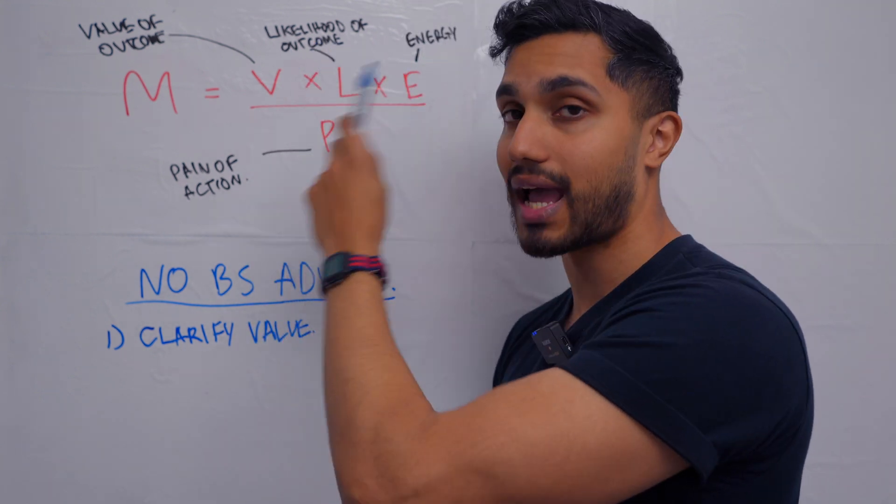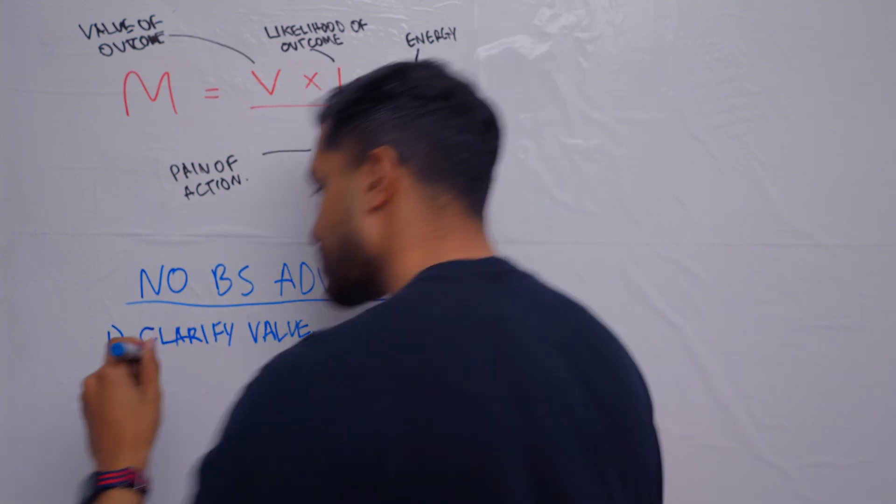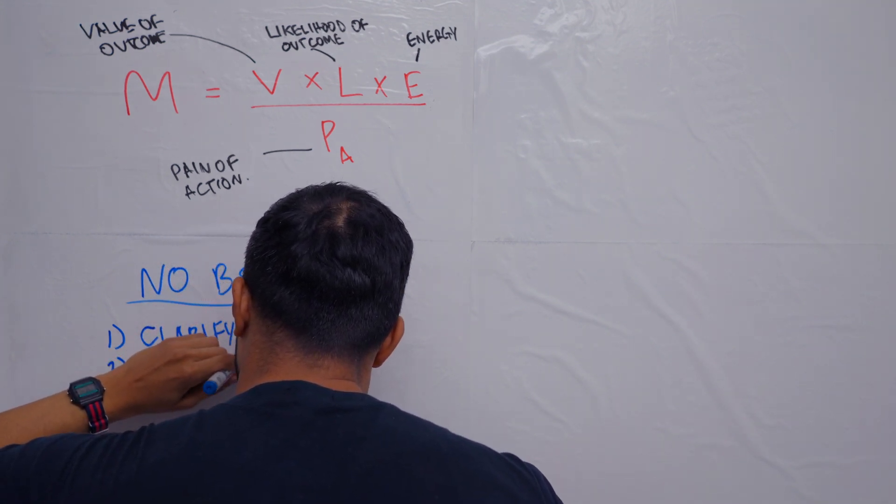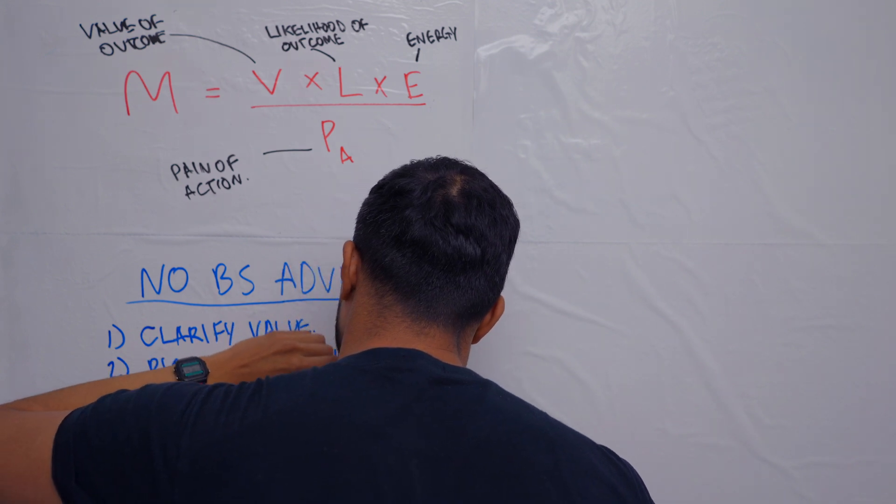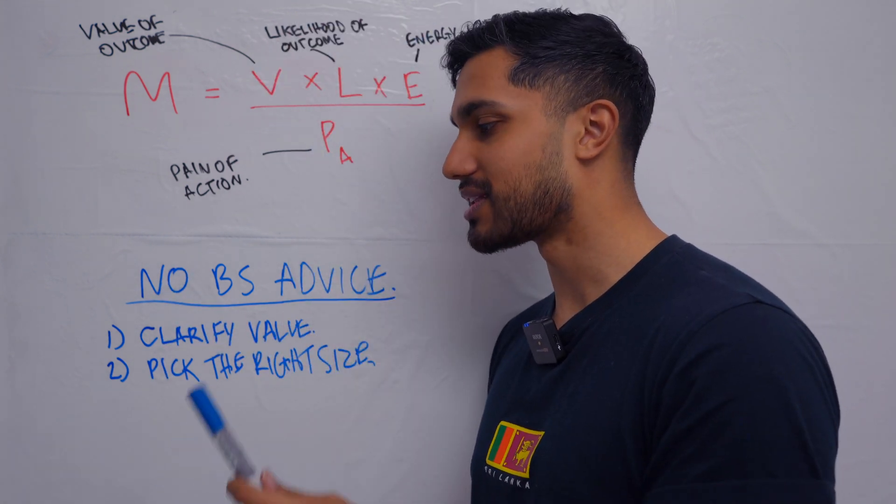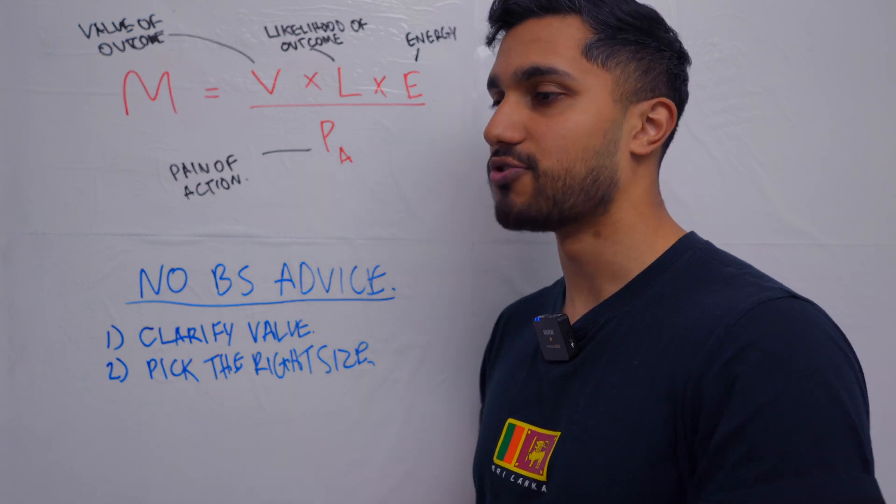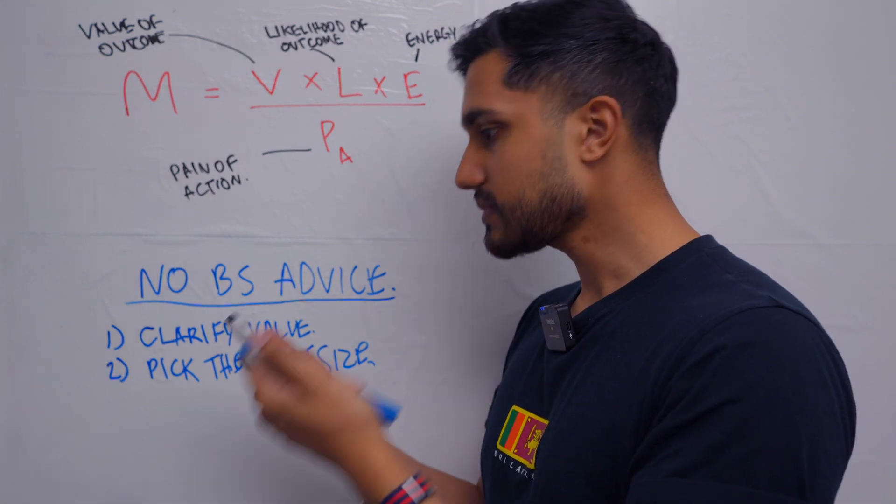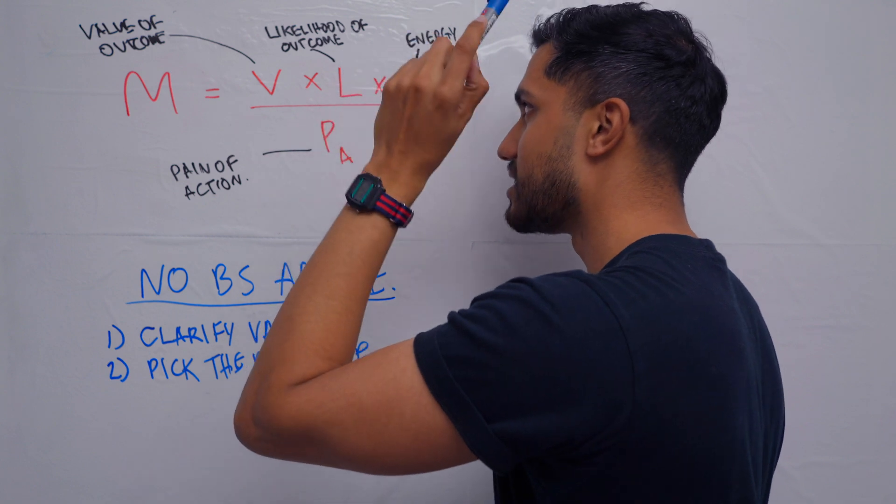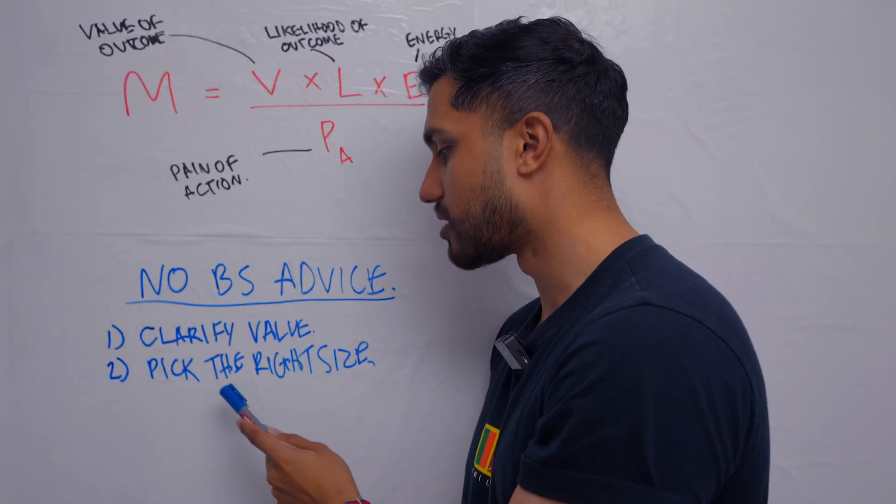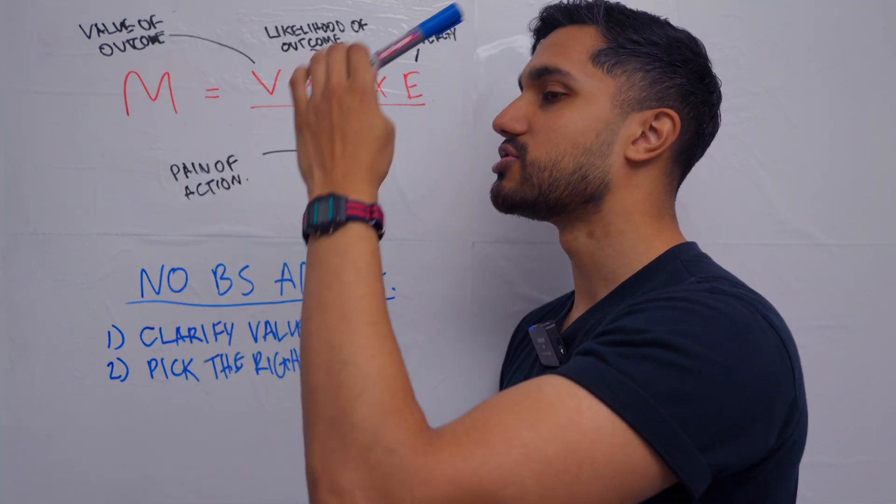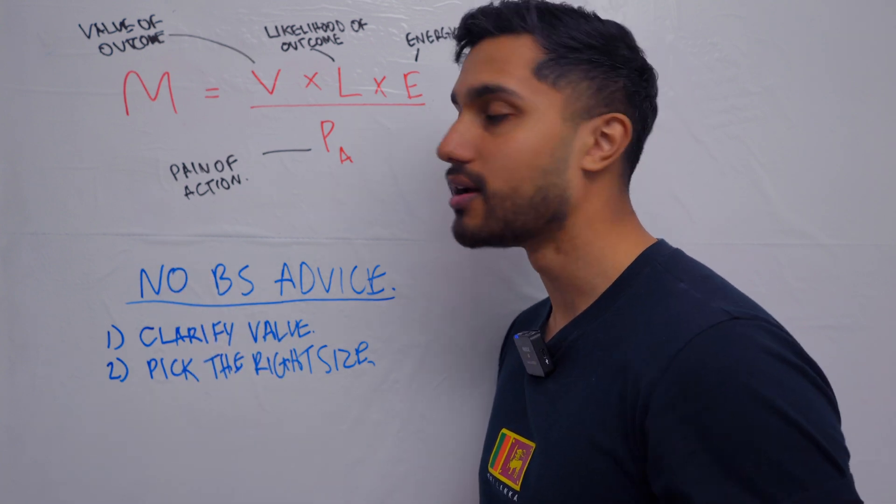The next thing you need to do to increase the likelihood of you achieving the outcome is to pick the right size. Do not try to give yourself something that is impossible to do. If you're in a rut right now, if you're not being motivated, if you haven't been going outside of work, you need to pick something that is small enough such that you can guarantee that you're going to be successful. And this is how it has to start. You have to pick a small enough exercise. I know that you're going to be worried that if I pick something so small, it's going to be so long before I get the outcome that I want.